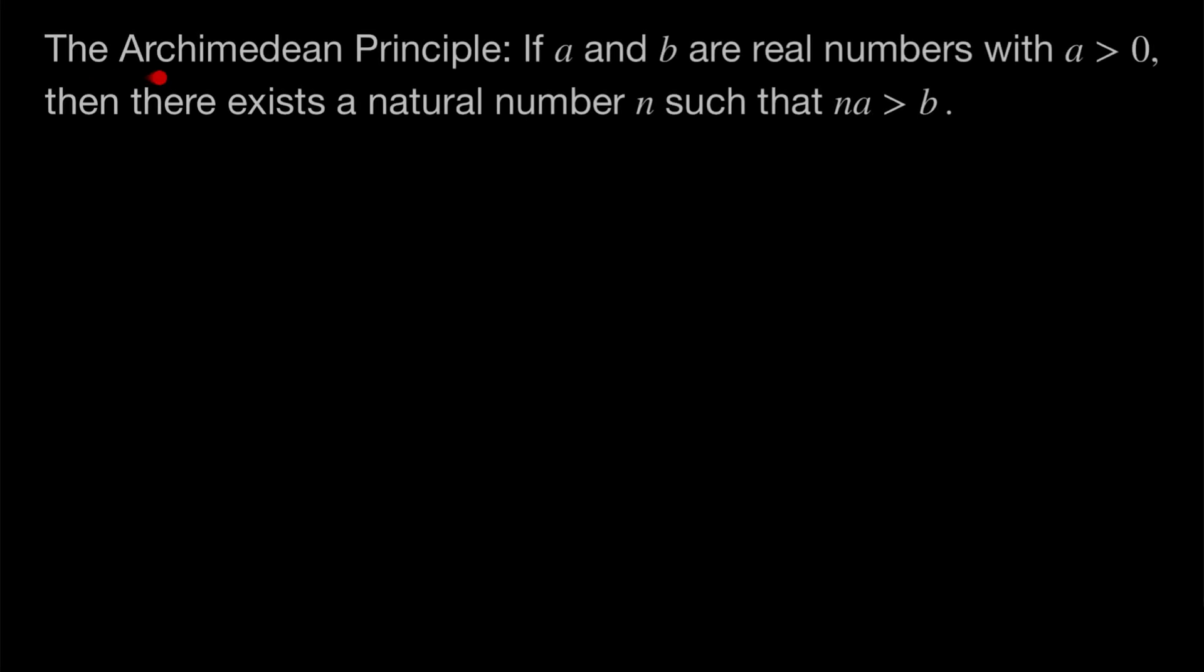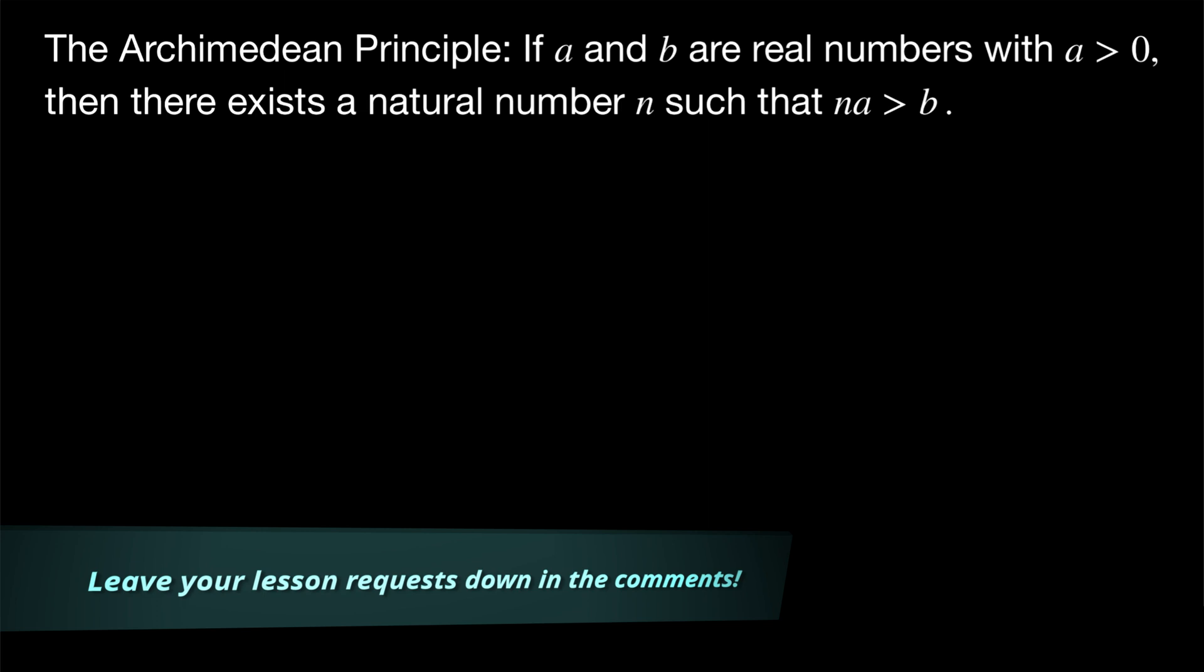The Archimedean principle states that if A and B are real numbers and A is positive, then there must exist a natural number N such that N times that positive real number A is greater than B. We'll be proving this in today's Wrath of Math lesson.